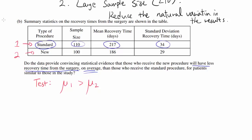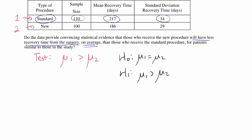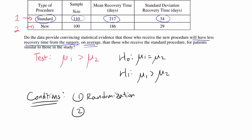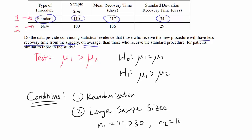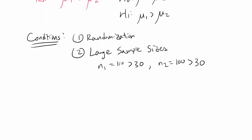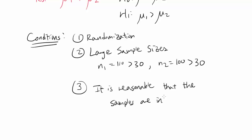The null hypothesis is H0: μ1 = μ2, and the alternative hypothesis is H1: μ1 > μ2. We always check conditions on the AP Statistics test. First, we have randomization. Second, we have sufficiently large sample sizes — the first procedure has n = 110, which is much larger than 30, and the second has n = 100, also much larger than 30, so the central limit theorem is likely to apply. Third, it is reasonable that the samples are independent.